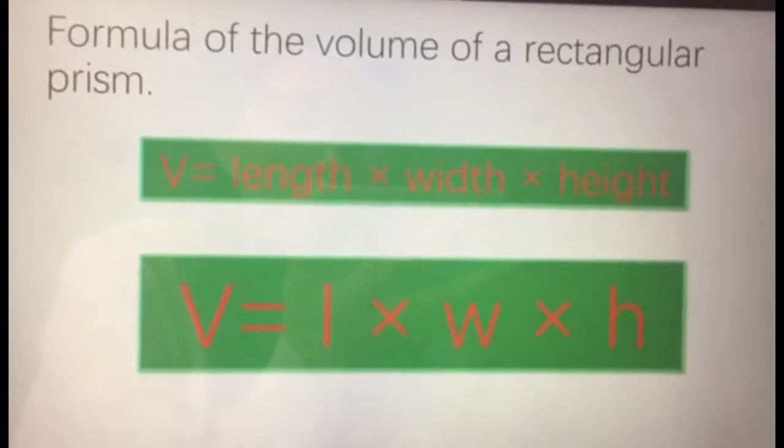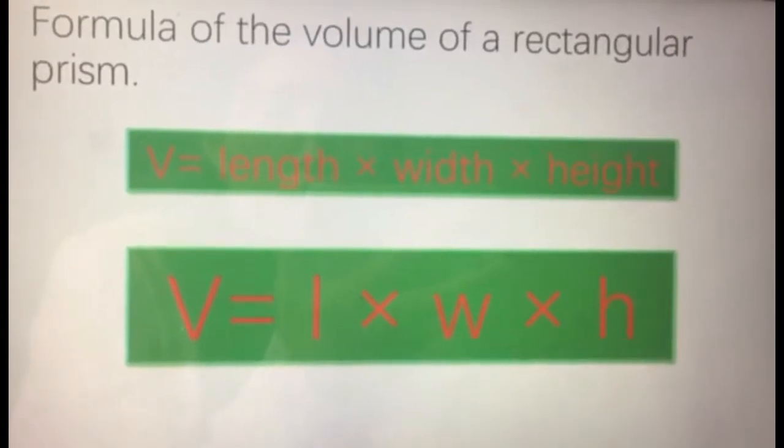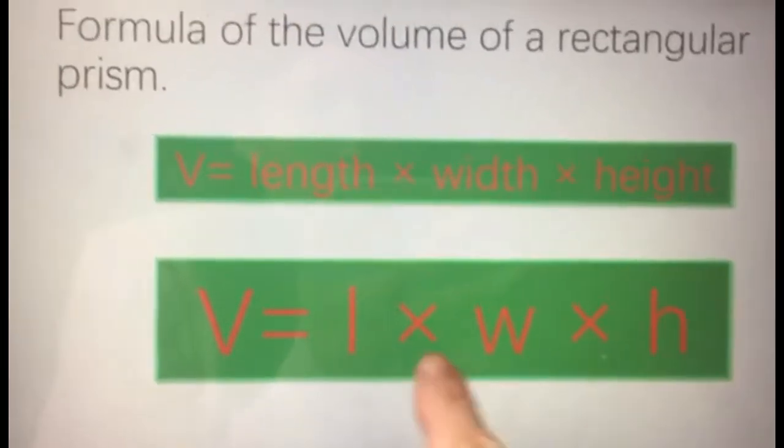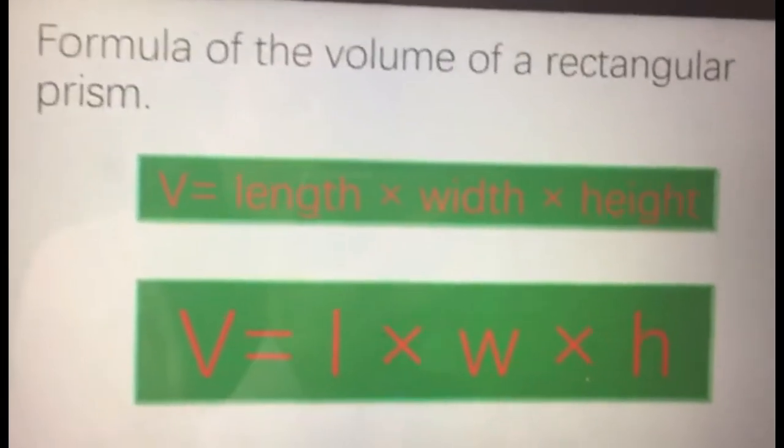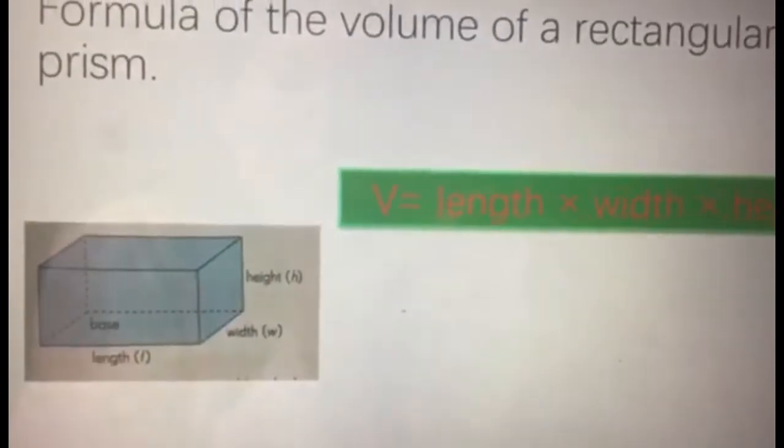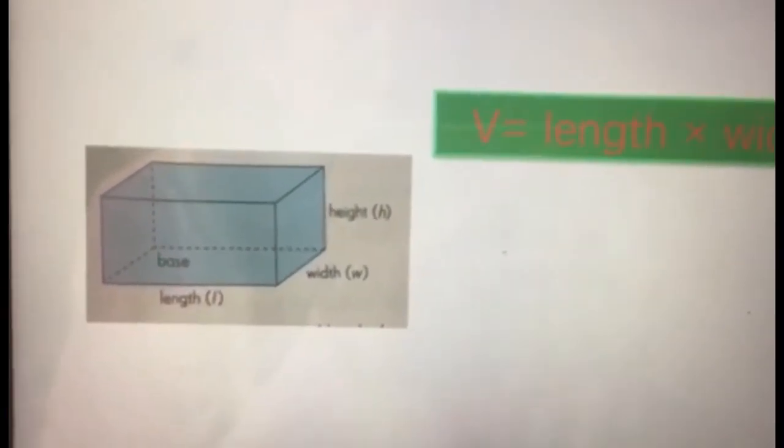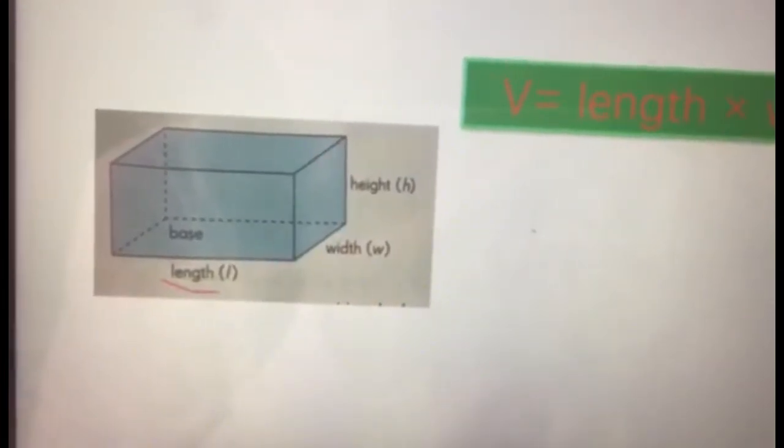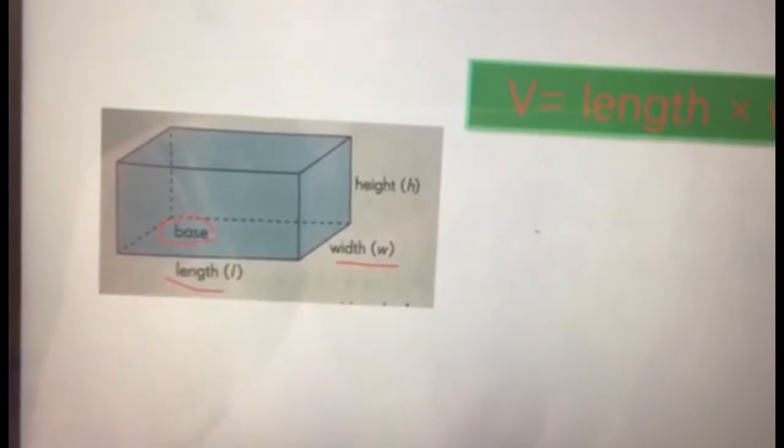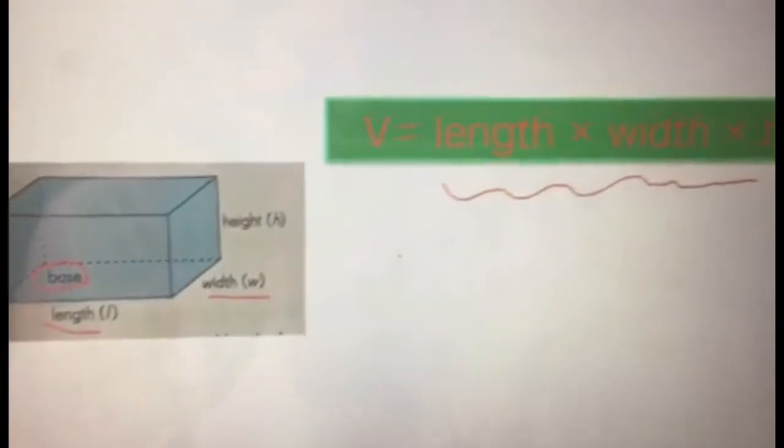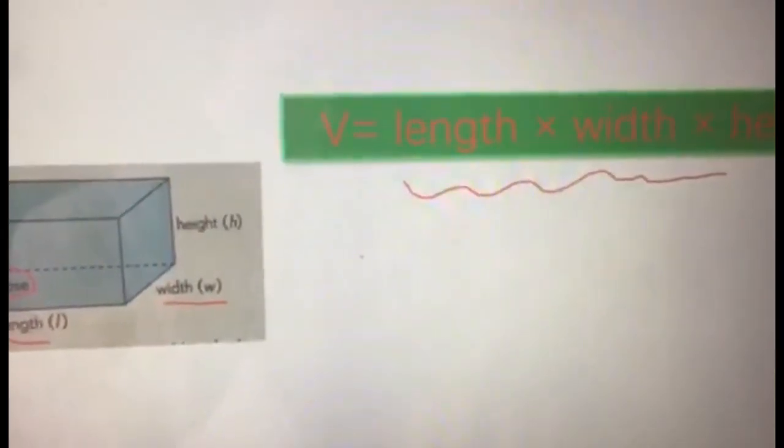If you want to save time, you can write l times w times h instead of the whole words. Sometimes instead of being given the length and the width, you are given the base, the area of the base, because we know that the length times the width would be the area of the base.